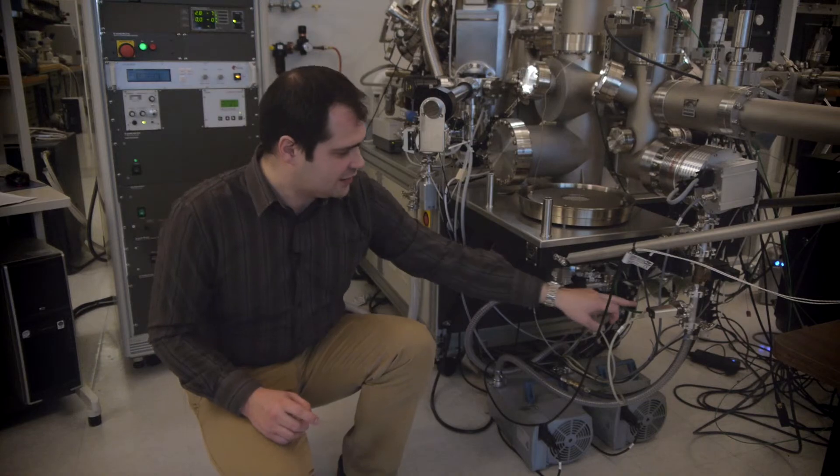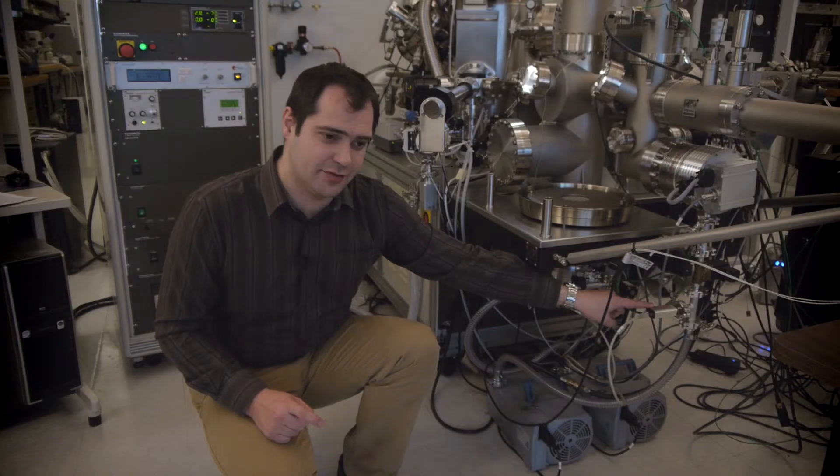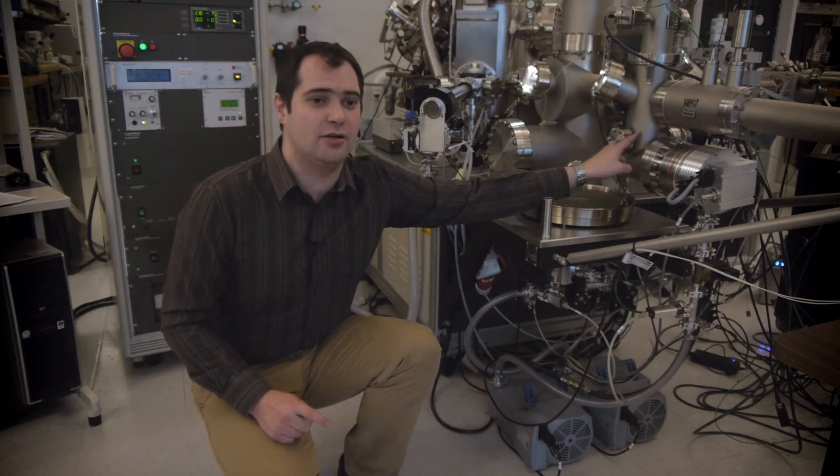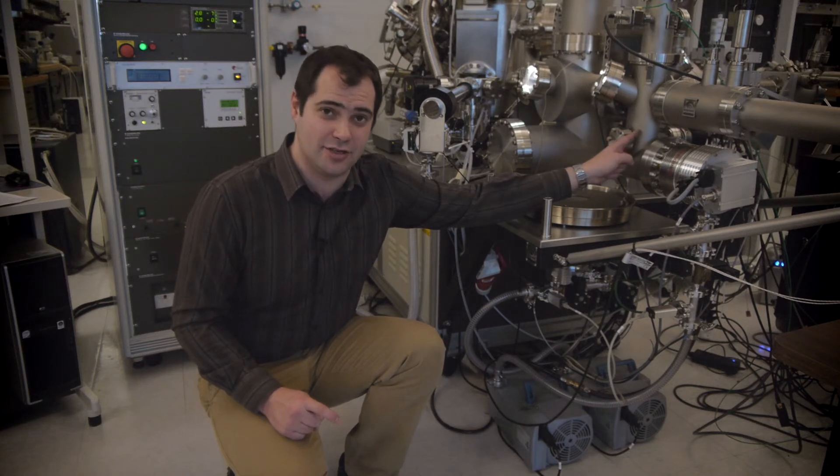We measure at various stages. Here we have a Pirani gauge for measuring our rough pressure. And on the other side of this chamber, we have a cold cathode gauge for measuring our high vacuum pressure or even ultra-high vacuum pressure.